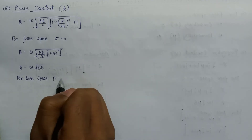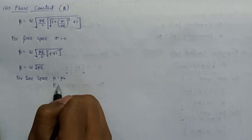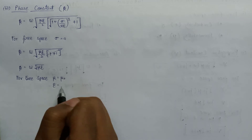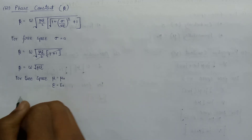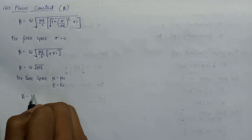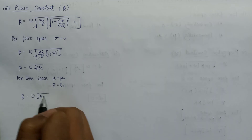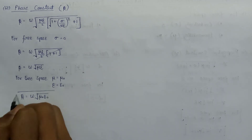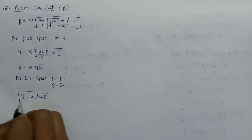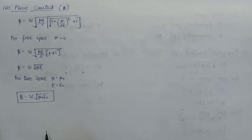Since for free space permeability mu equals mu zero and permittivity epsilon equals epsilon naught, replacing both terms gives the phase constant equal to omega times the square root of mu zero·epsilon zero. This is the expression for the phase constant when the wave is propagating in free space.